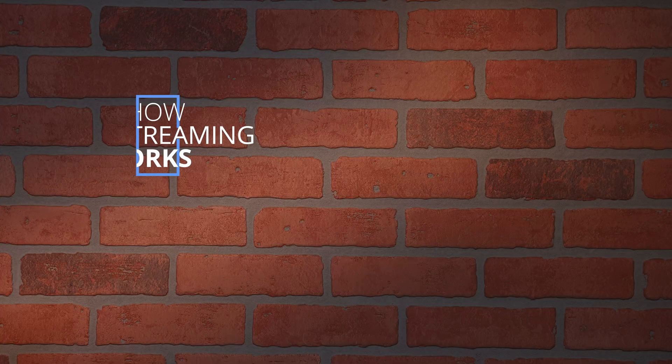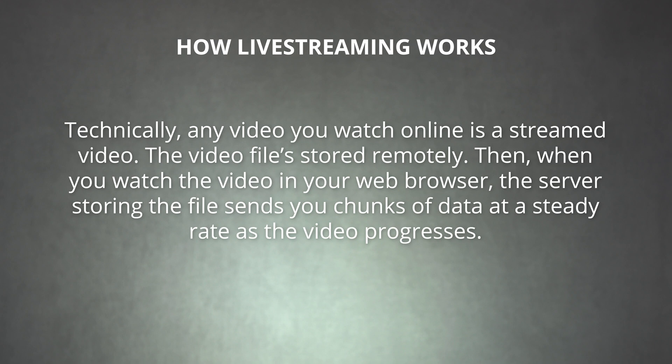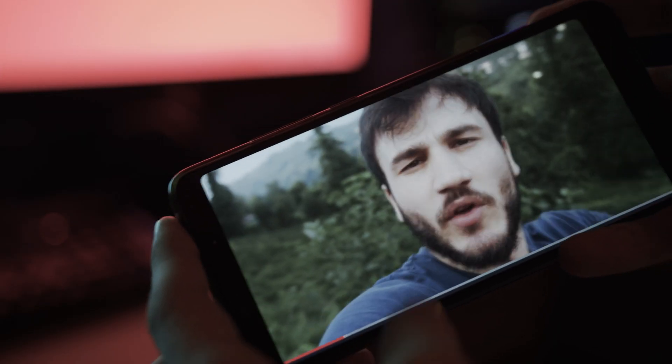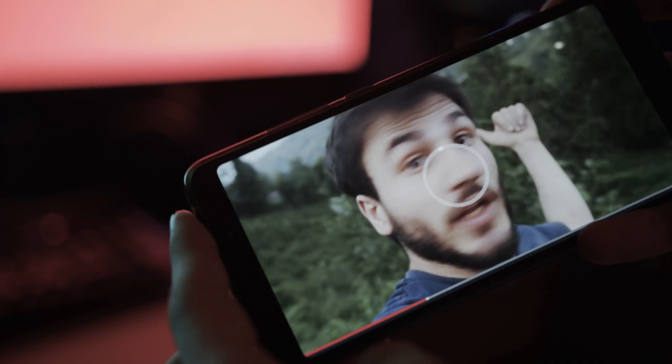Now that you have a better idea of what live streaming is, let's dig into how it works. Any video you watch online is a streamed video. The video's file is stored remotely. When you watch the video in your web browser, the server storing the file sends you chunks of that data at a steady rate as the video progresses. This saves you from having to download the video before watching it. It's also why you sometimes have to wait for a video to buffer when you have a slow internet connection. The video player is storing up more video data so that it can play back the next section smoothly. With live streaming, instead of transmitting data from a file on a server, you're transmitting data as it's captured.